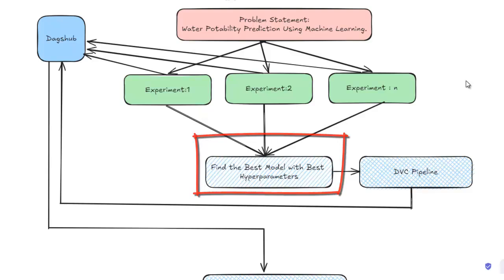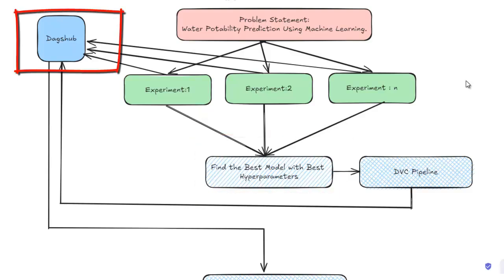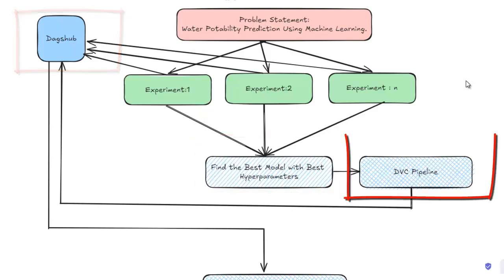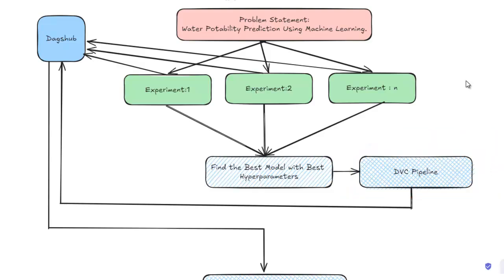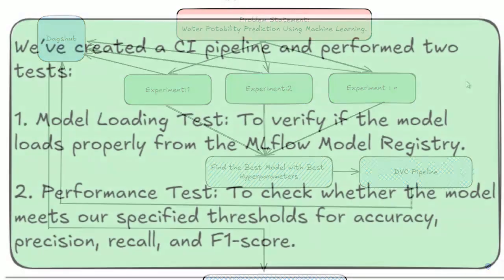We are logging everything using MLflow on Daxup. We have created a DVC pipeline with our best model. Also, we have registered our best model in the MLflow model registry, which is available on Daxup. In the last video, we created a CI pipeline — a continuous integration workflow — and performed two tests.